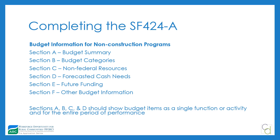The SF-424A has several sections, although some will be blank. The big ones are Section A — your budget summary — and Section B — your budget categories. There's also a section for non-federal resources, forecasted cash needs, future funding, and other budget information. Sections A through D should show budget items as a single function or activity for the entire period of performance.